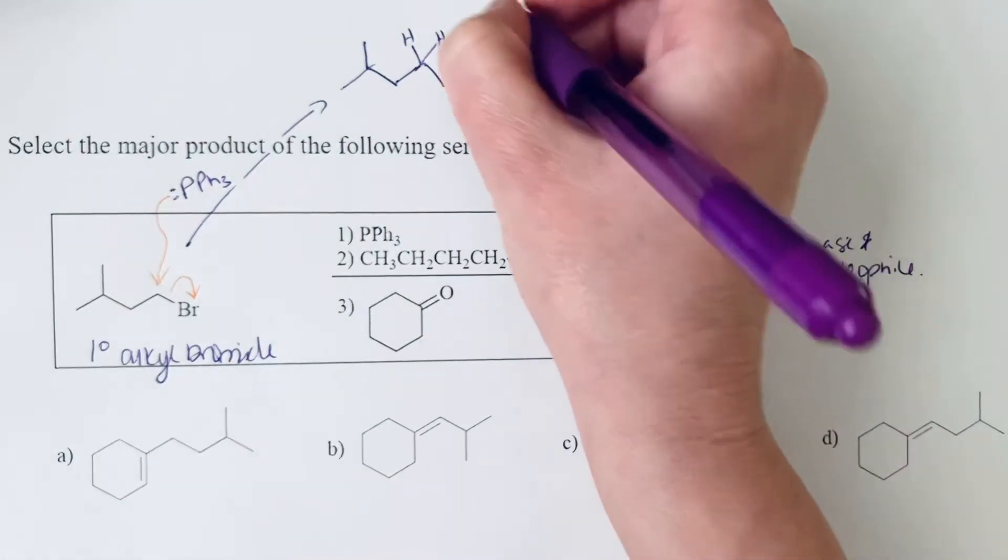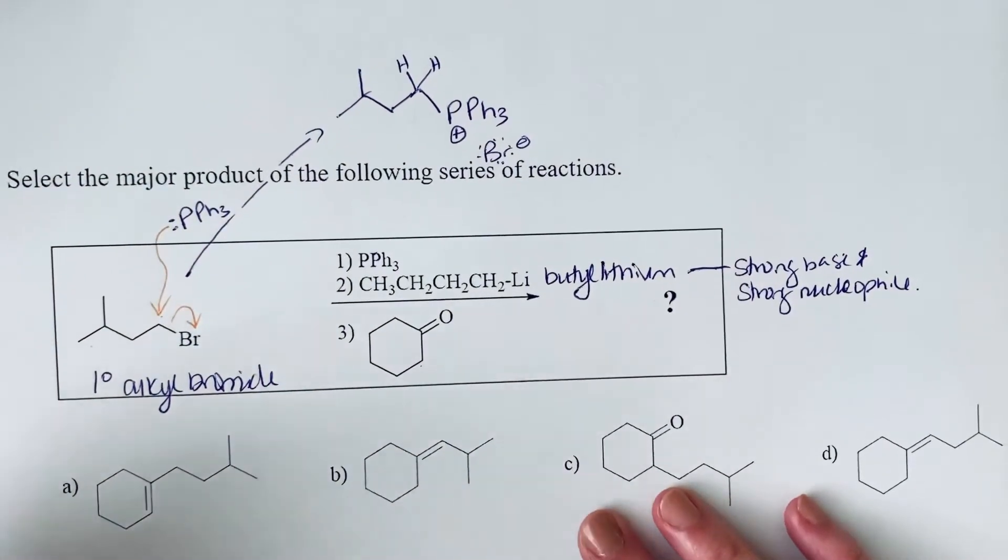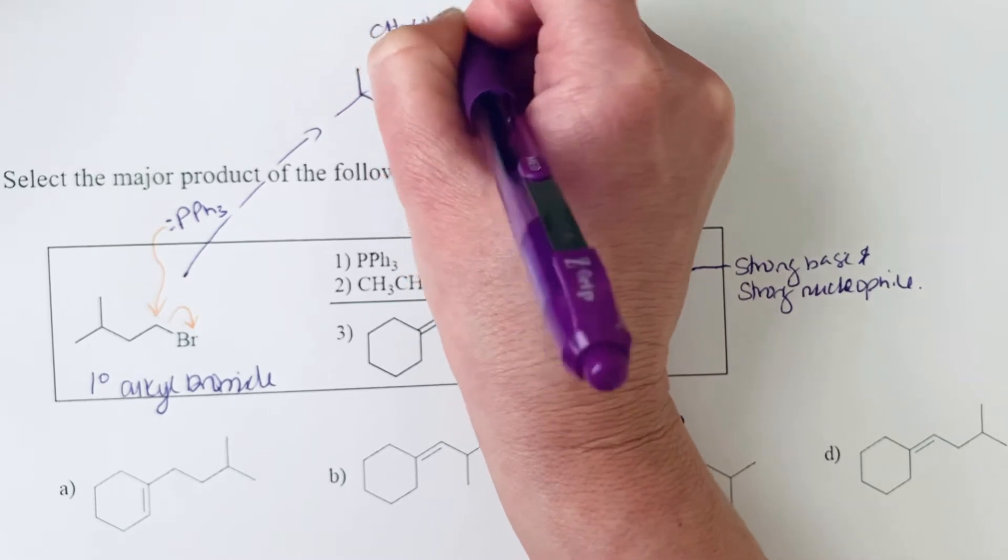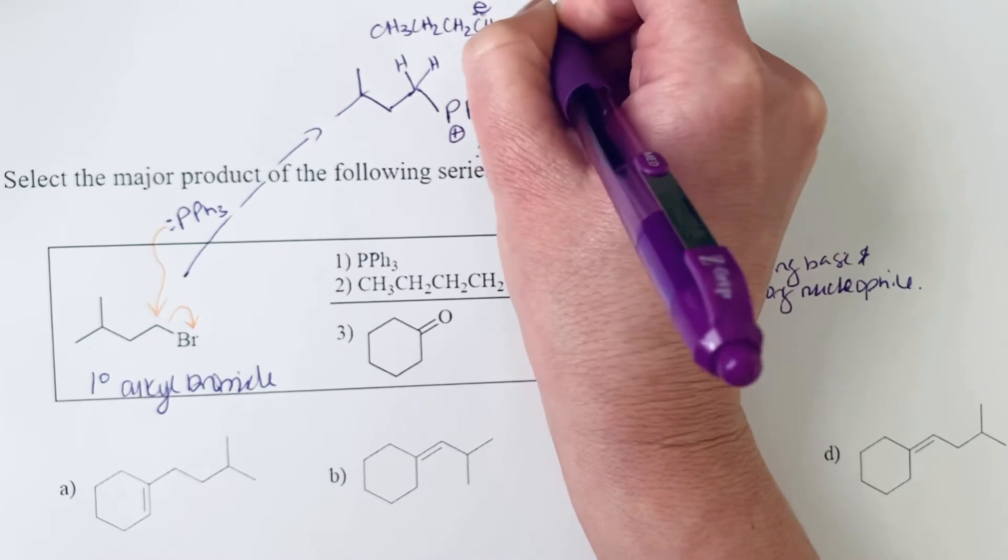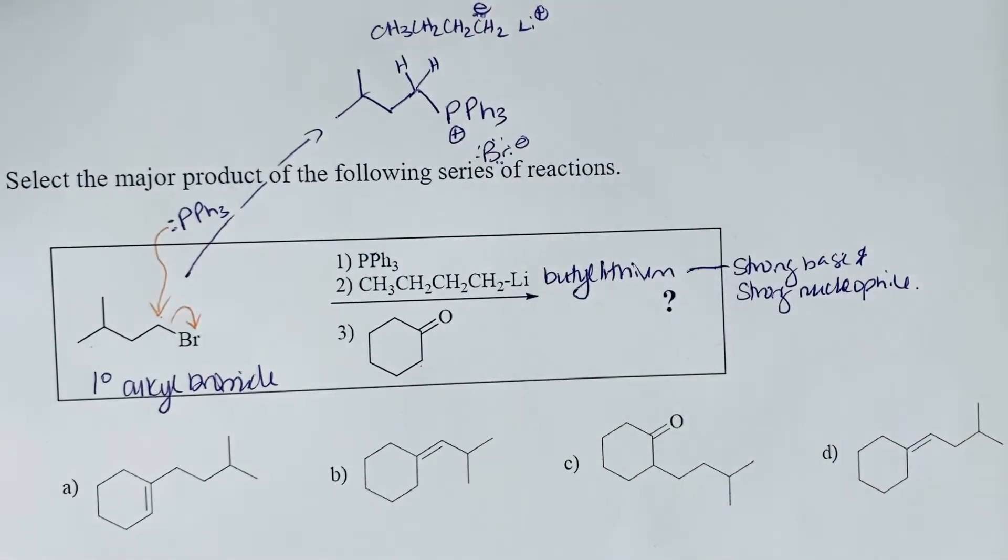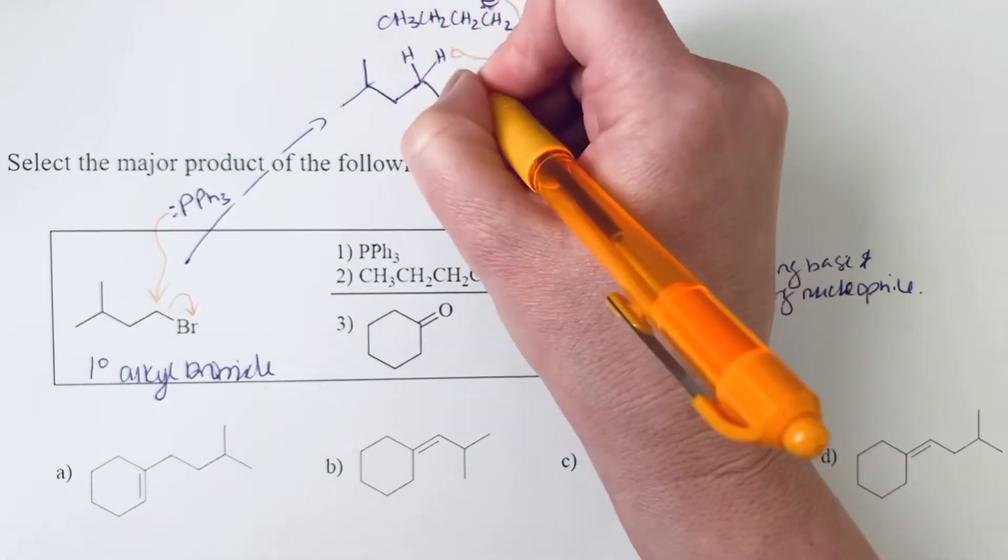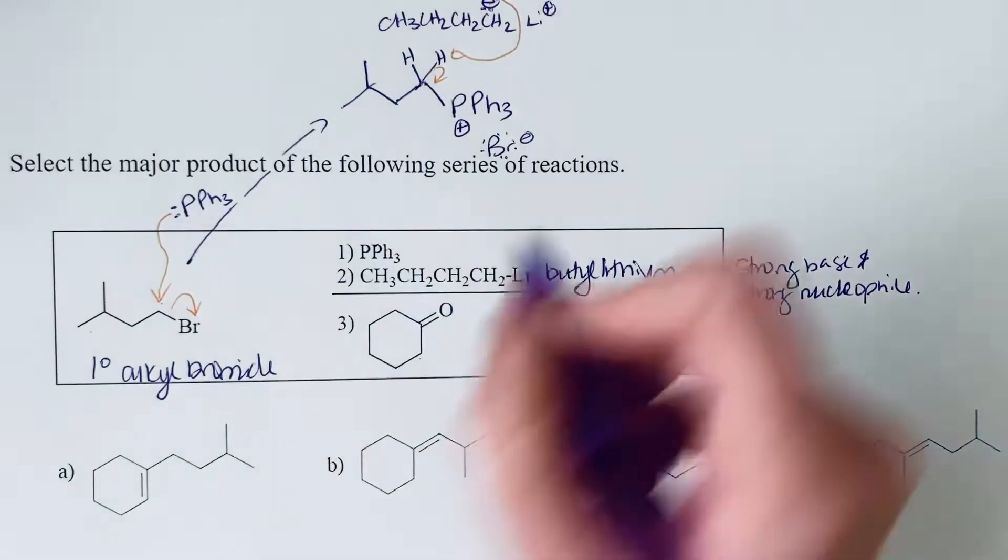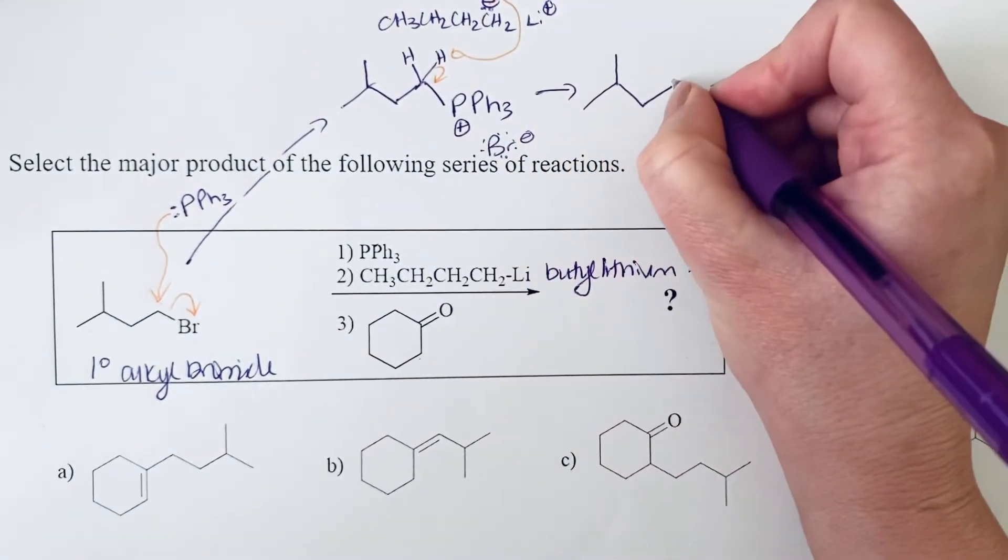We can draw out the structure of this butyl lithium. We could think of this really as being like a carbanion where we have that negative charge and lithium as a positive charge. This is going to remove one of these two protons. It really doesn't matter which one. What we're forming here is an ylide.